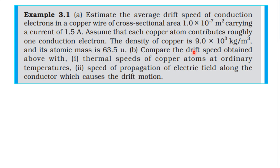Compare the drift speed obtained above with: first, the thermal speeds of copper atoms at ordinary temperature; second, the speed of propagation of electric field along the conductor which causes the drift motion. That is one copper conductor.